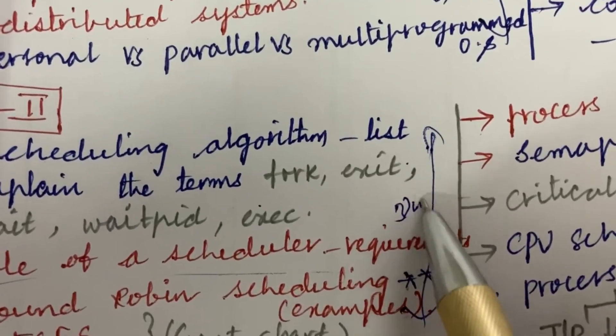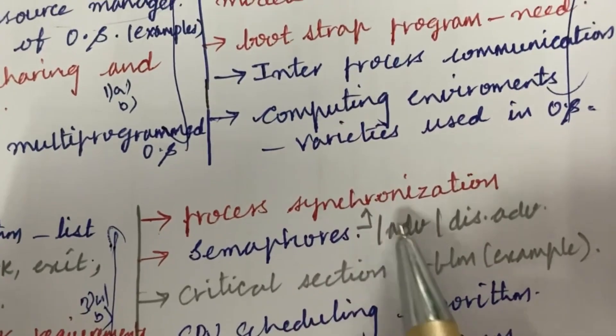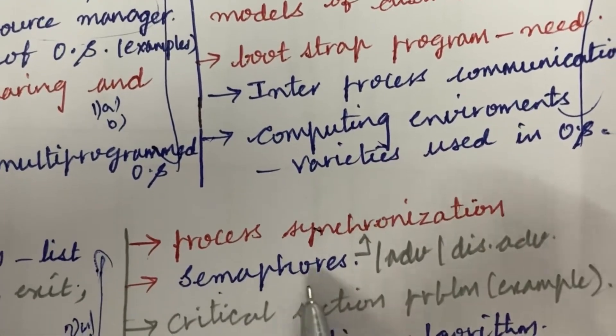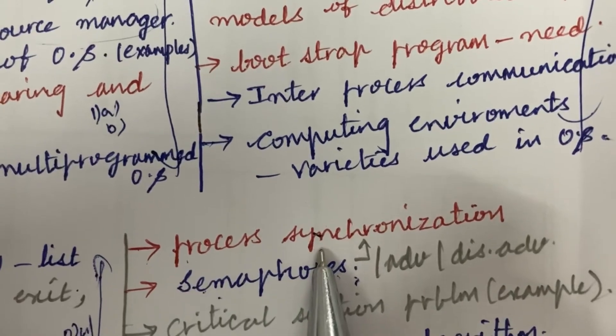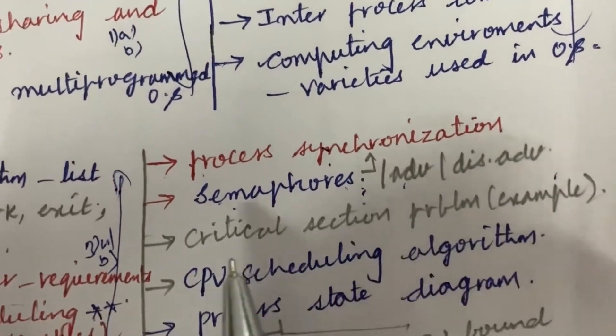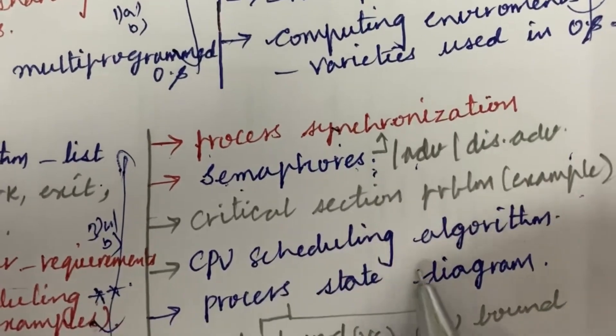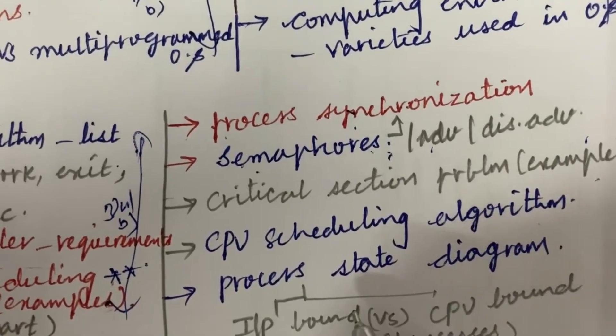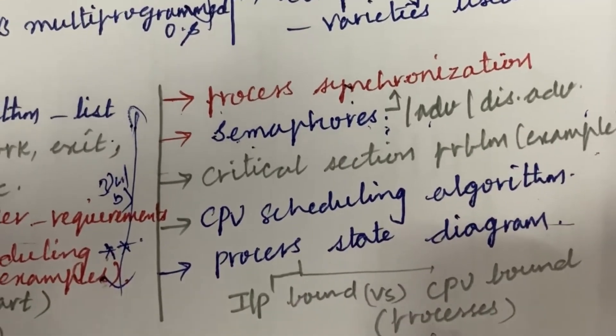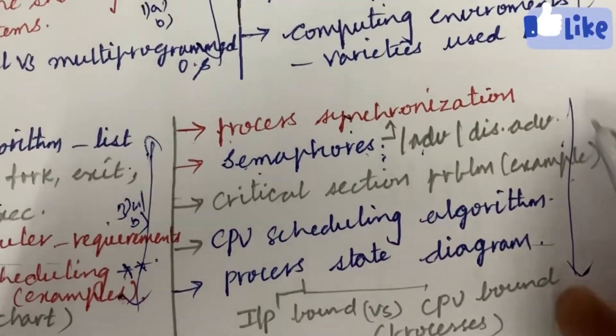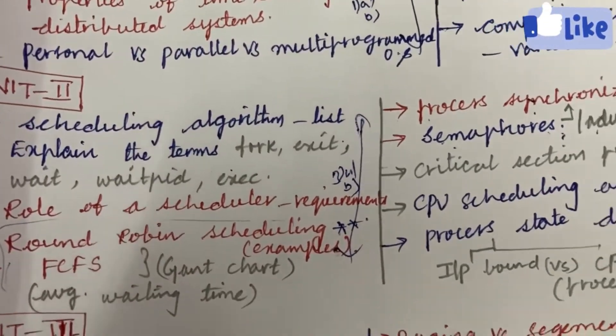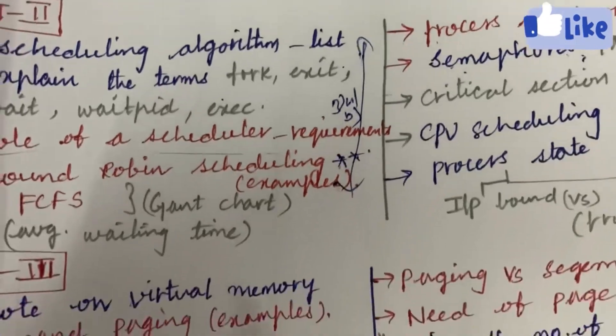Define the process synchronization and semaphores - this is also one of the very important questions. Process synchronization and its advantages and disadvantages. Critical section problem and examples. CPU scheduling algorithm as well as process state diagram. The differences between I/O bound process as well as CPU bound process. From this part you can be getting 4a as well as 4b. Please write your exam very neatly to score a good mark.